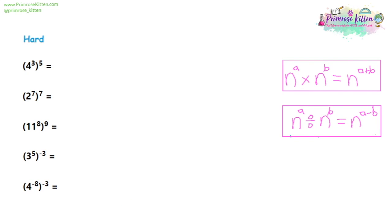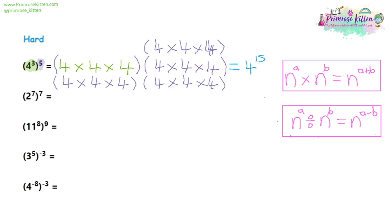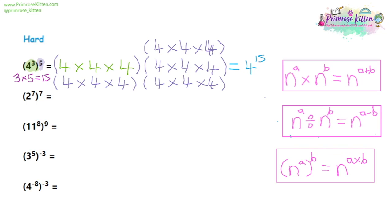Some slightly harder ones now because we've introduced brackets. We have four to the power of three, all to the power of five, which means we're going to have five sets of brackets with four times four times four in them. If we count up all of those fours, we find there are 15 fours, giving us an overall answer of four to the power of 15. We can see that three times five gives us 15, so from this we can write another rule: if we have brackets, we need to multiply the indices by each other.